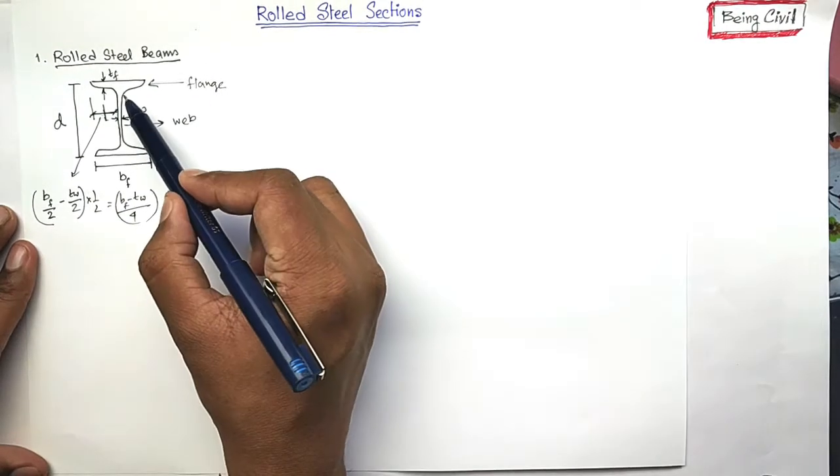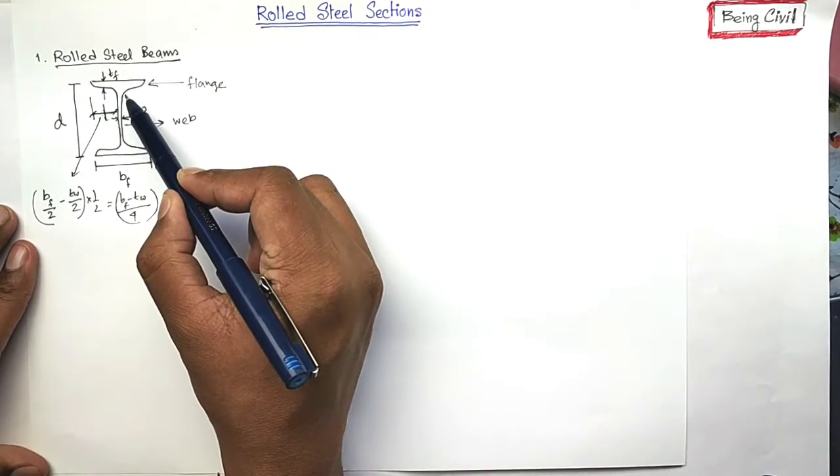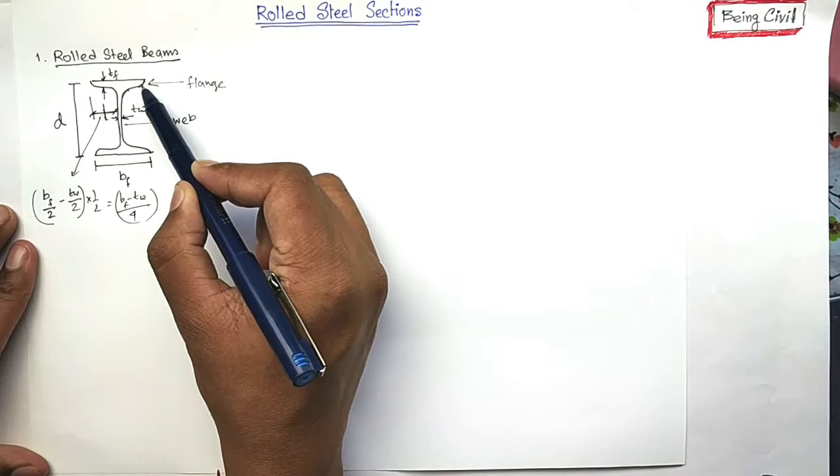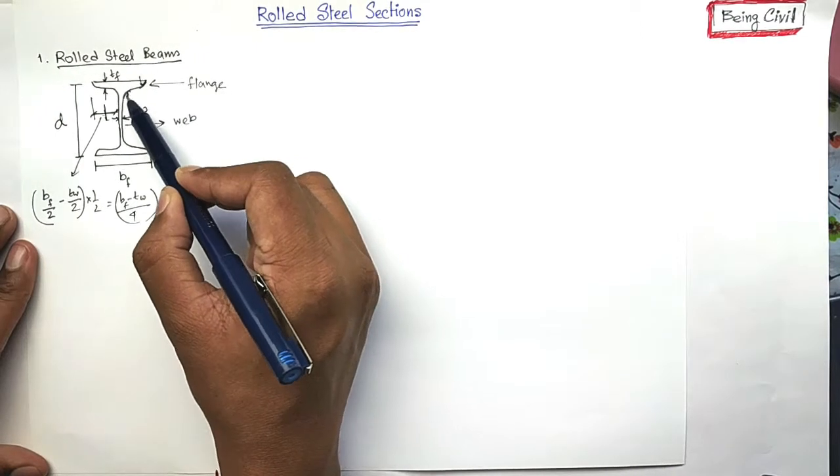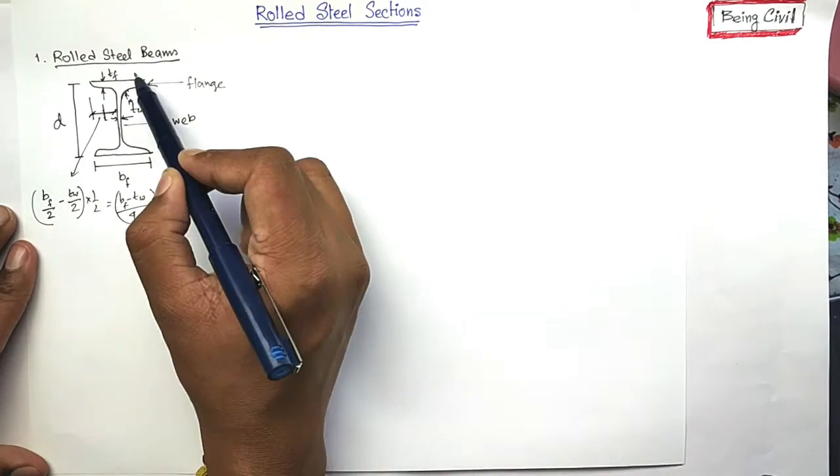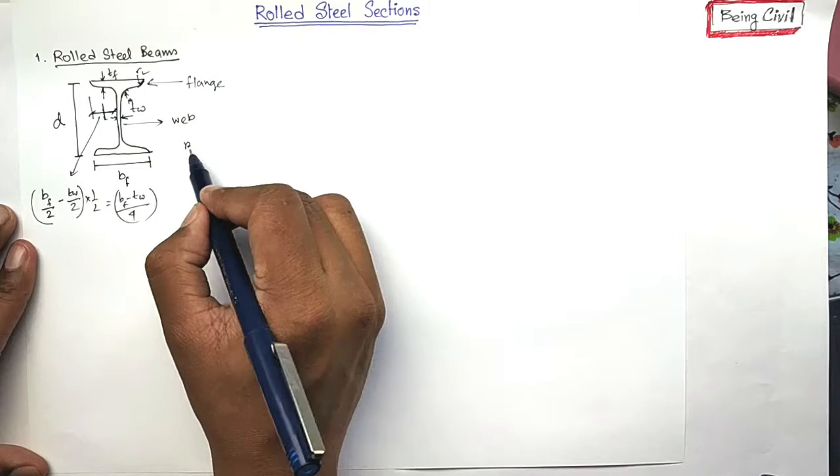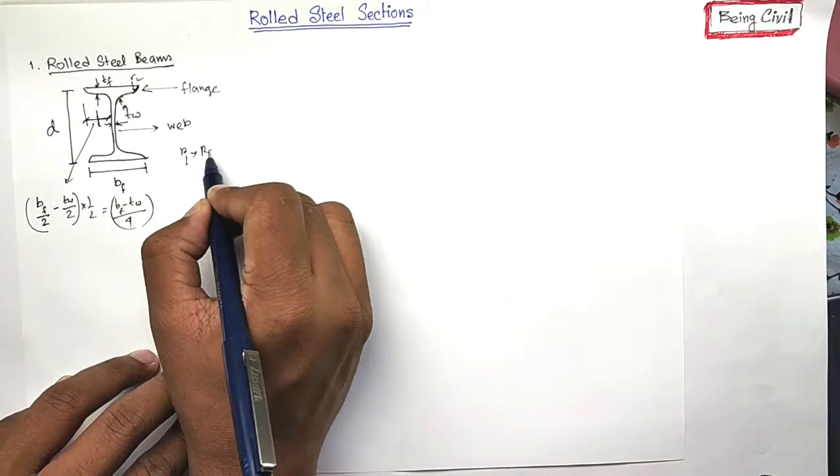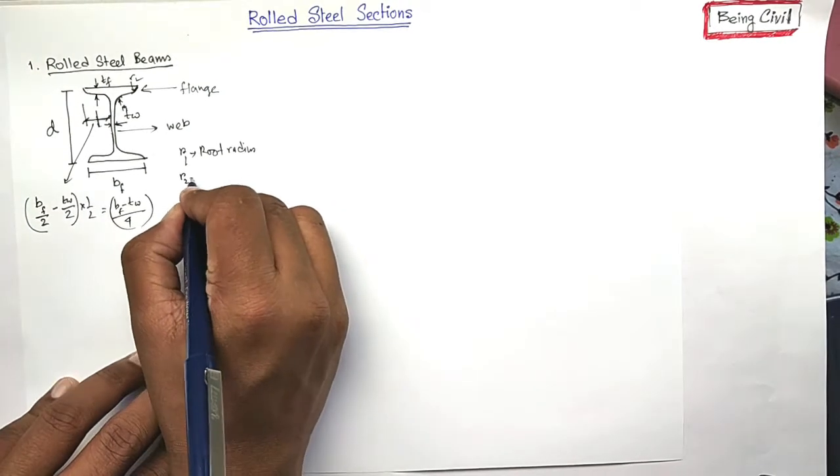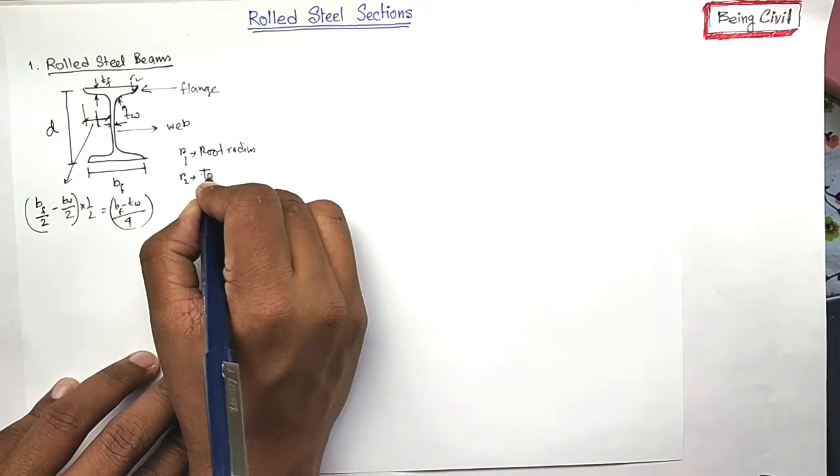And you see, there is a round shape here and here. These are some radius. This is called R1, R2. R1 is root radius and R2 is toe radius.